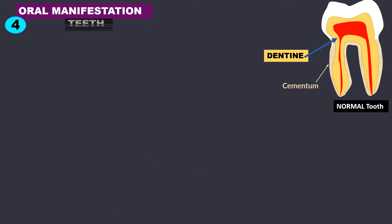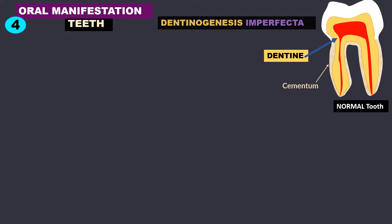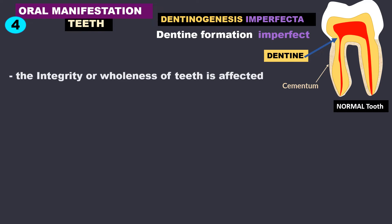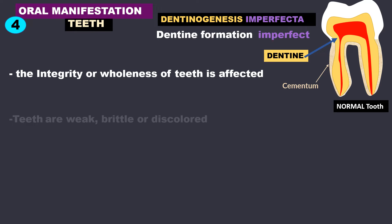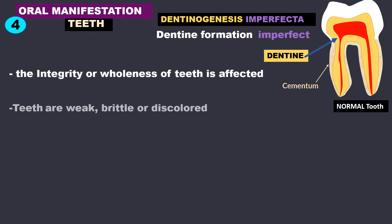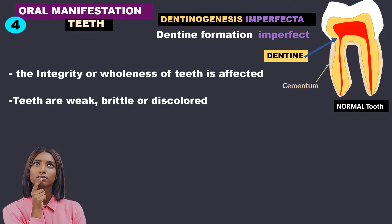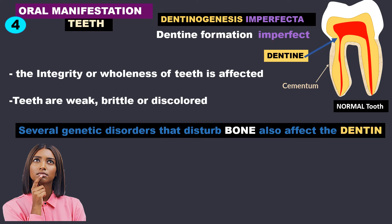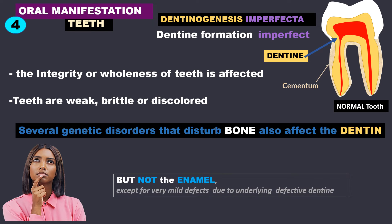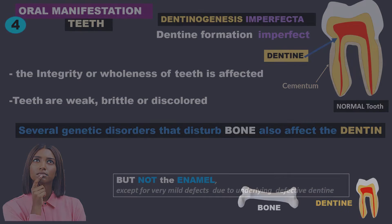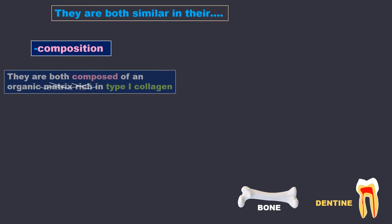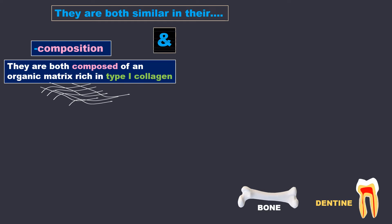Oral manifestations are seen in the teeth as dentinogenesis imperfecta, meaning dentine formation is imperfect. The integrity of the teeth is affected and can be seen in the form of teeth that are weak, brittle, or discolored. Several genetic disorders that disturb bone also affect the dentine but not the enamel, because both bone and dentine are composed of an organic matrix rich in type 1 collagen.